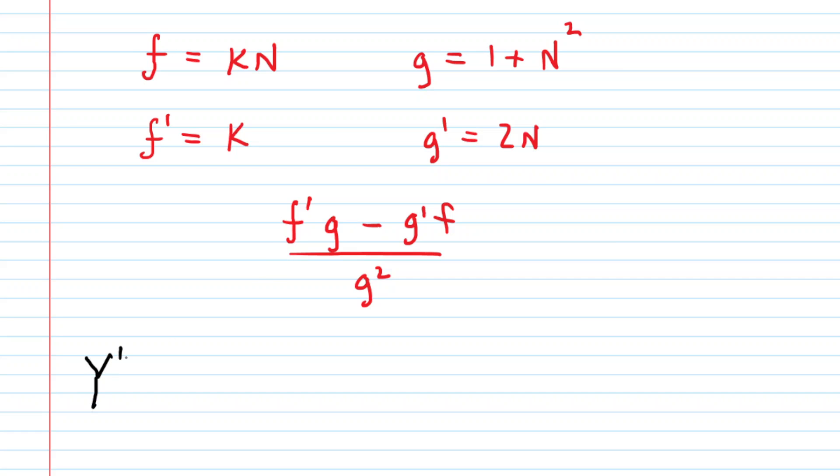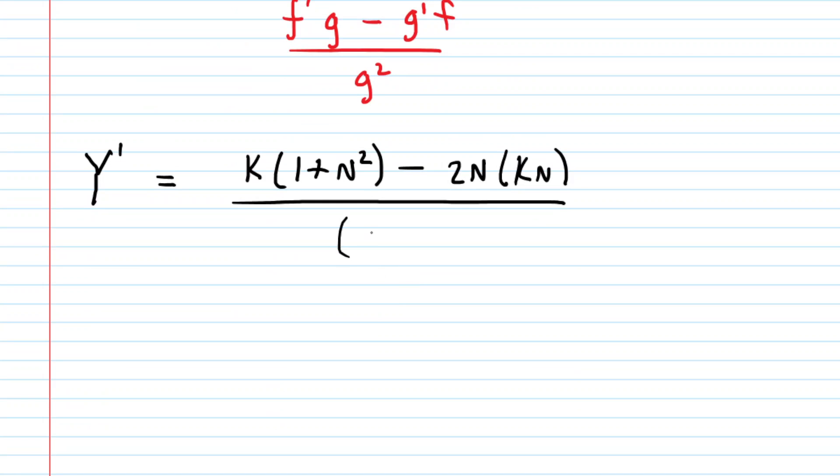So here we go. We could call the derivative Y'. We start out with f', which is k, multiplied by g, which was 1 plus N squared. Then minus g', which was 2N, multiplied by f, which was kN. This is all divided by g squared. g was 1 plus N squared. So we'll have 1 plus N squared quantity squared.